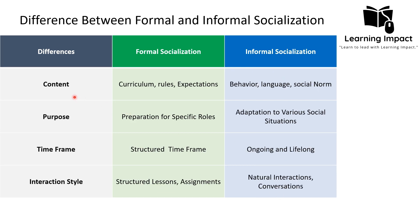Regarding content: formal socialization content includes curriculum — for example, in an education institution the curriculum is approved by a common body — or rules and regulations, such as a company's own standards that an individual must follow. Informal socialization content is based on behavior, for example an individual learning how to interact with elders by imitating them.